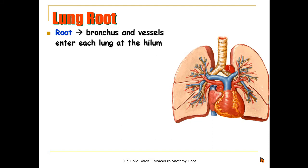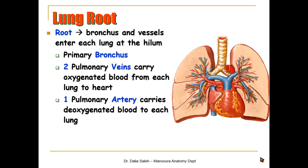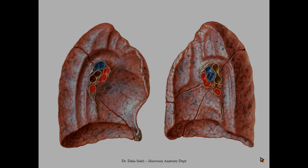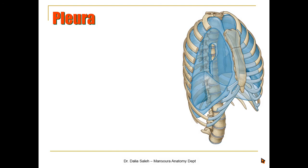The lung root is where structures enter or leave the lungs at the hilum. The primary bronchus, two pulmonary veins carrying oxygenated blood from each lung to the heart, and one pulmonary artery carrying deoxygenated blood to each lung all pass through the hilum, along with nerves and lymph vessels. At the hilum, the bronchus is at the most posterior end, the pulmonary veins at the most anterior end, and the pulmonary artery in the middle.